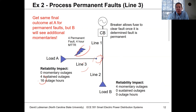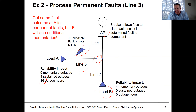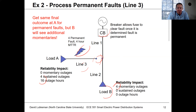Because the circuit breaker is set up for fuse savings, it tries to clear the fault first — meaning customers at load B see blinks and momentaries. So load B sees four momentary outages associated with those four faults on line section three. The trade-off is: to get less fuse blowing, we have to live with more momentary blinks.